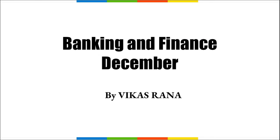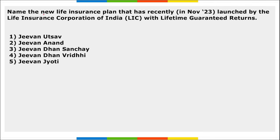Hello everyone. In this video, we will be discussing important current affairs for the topic Banking and Finance for December month. The session will be quite interesting and important — do take notes. First: name the new life insurance plan recently launched by LIC with lifetime guaranteed returns. It is G1 Utsov — the new plan launched by LIC guaranteeing lifetime guaranteed returns, providing regular band income benefits as well as flexi income benefits.